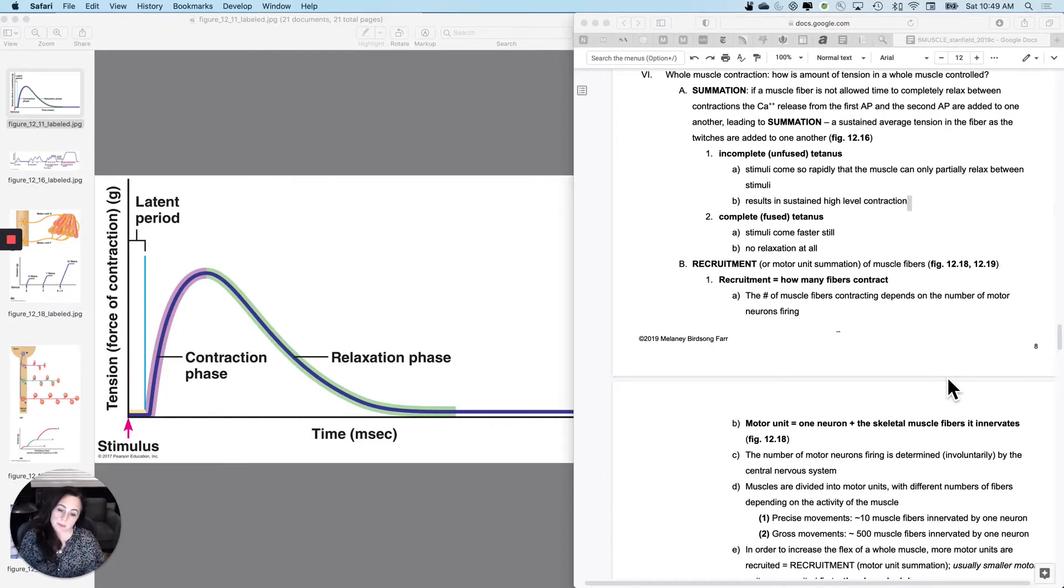You can use your biceps brachii to pick up a pin, or to pick up a child, a dumbbell, or a bucket full of bricks. So you can use your muscles to different degrees. They are not just on or off. Although action potentials are on or off, muscle contraction has degrees. So what I want to ask and answer is how is the amount of tension that is generated in a whole muscle controlled?